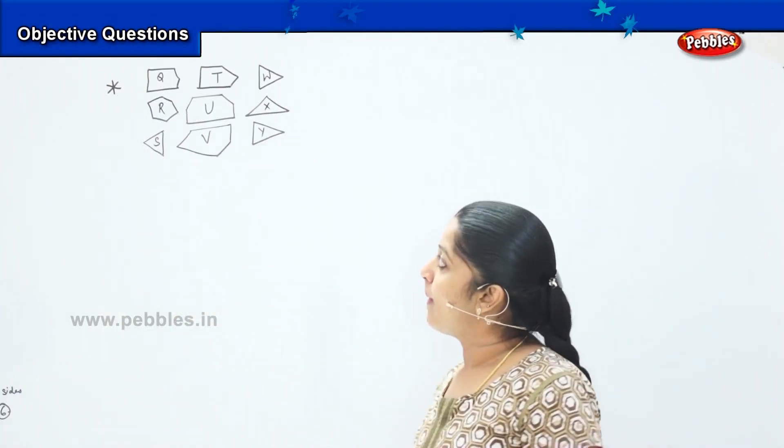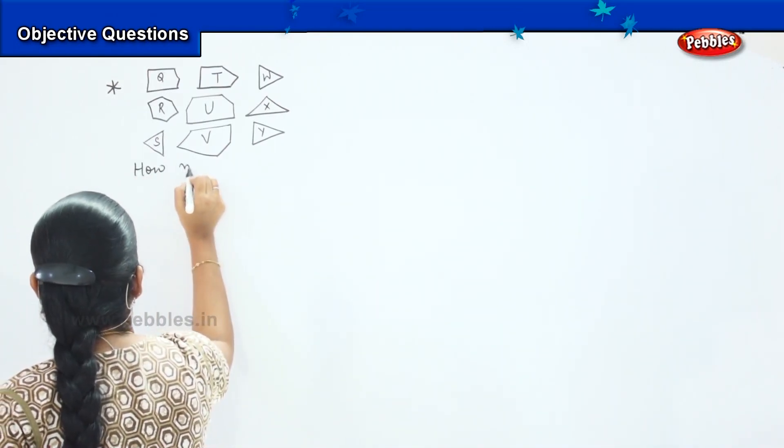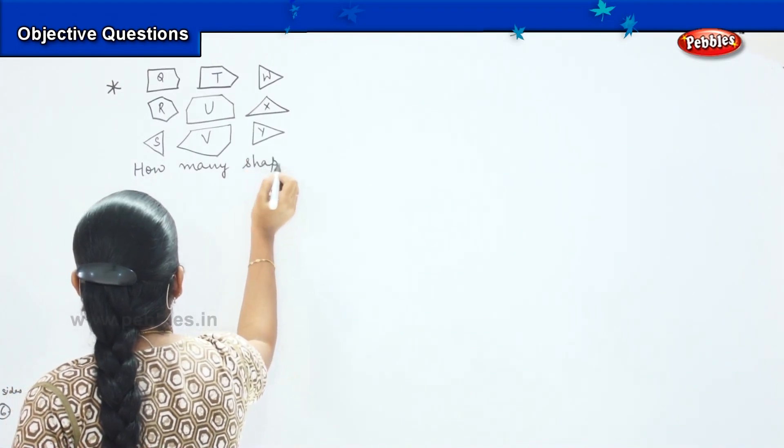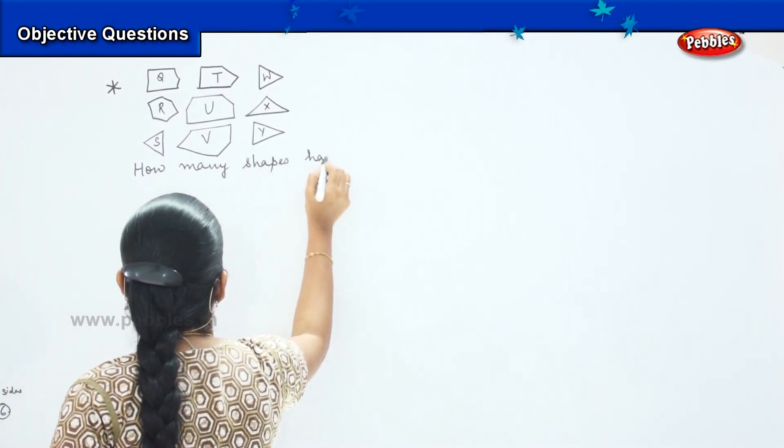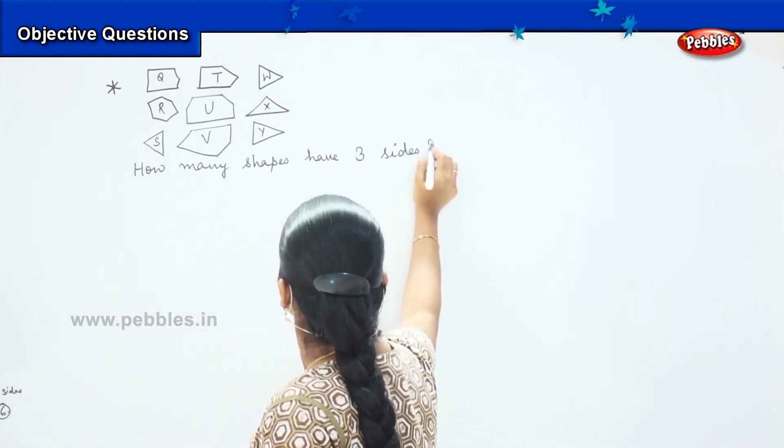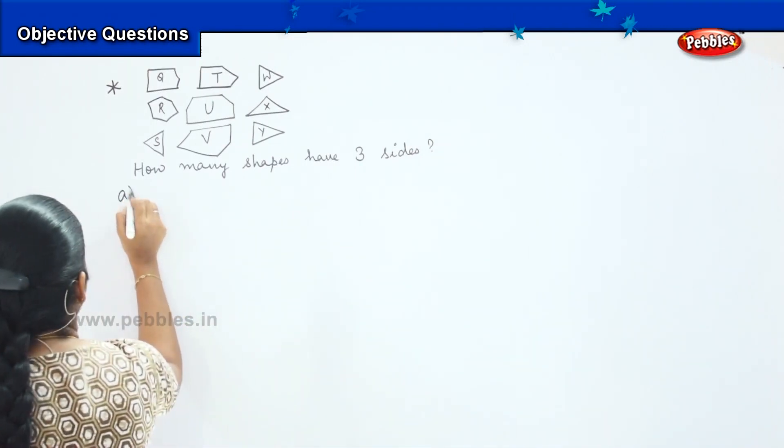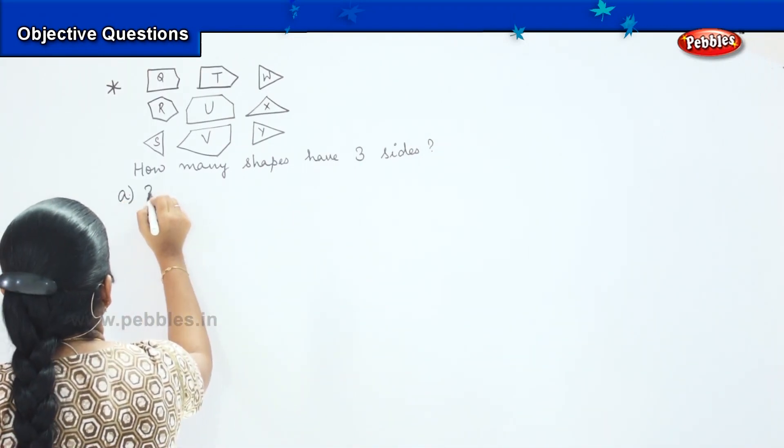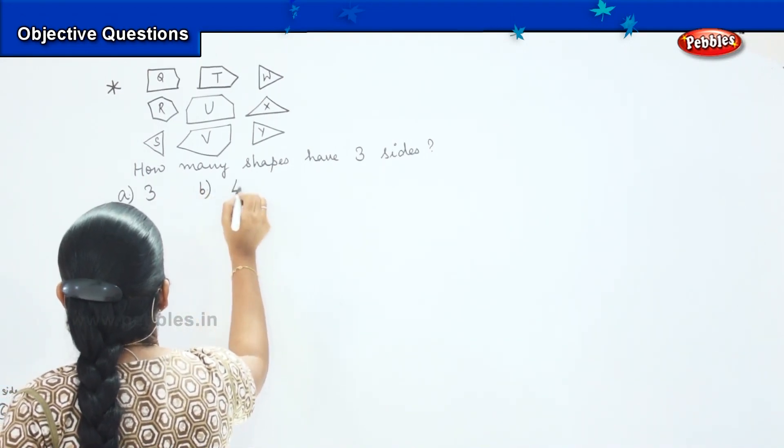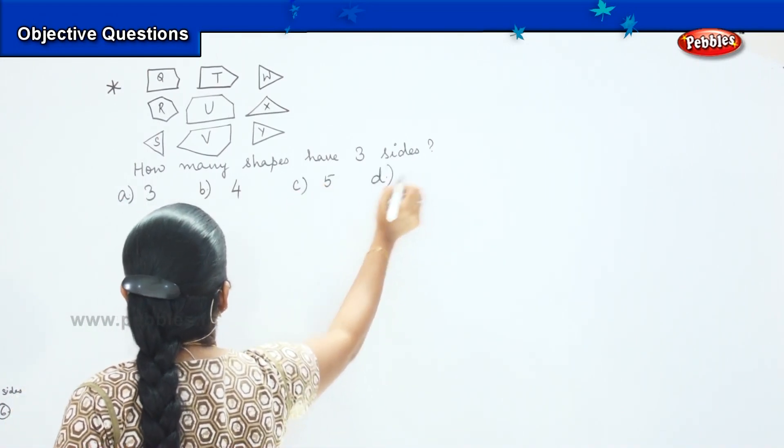So, now my first question is, how many shapes have three sides? And my options are A, 3, B, 4, C, 5, and D, 6.